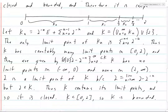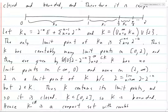Hence K is a compact subset of ℝ — a compact set with countably many limit points, which is what we wanted to show. Of course, there are other sets we can construct that are compact subsets of ℝ with countably many limit points. In fact, you can take this set and translate it or stretch it as much as you want and it will still work. There might also be easier examples, but this one certainly works.